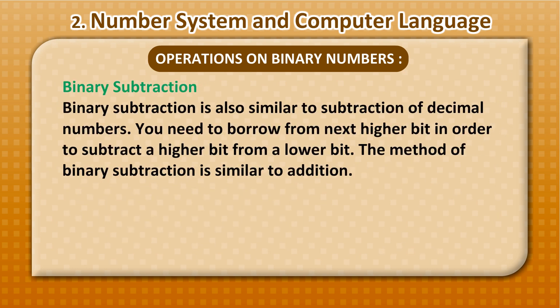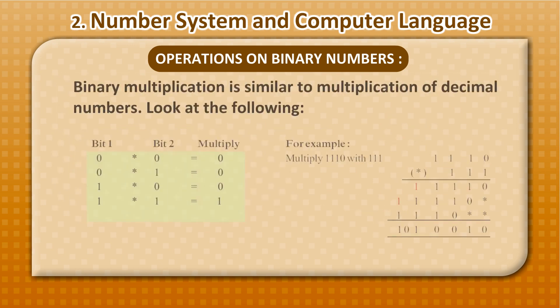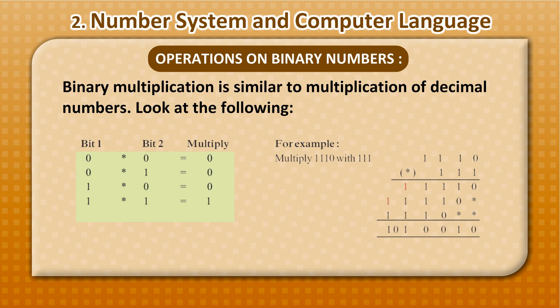Binary subtraction is also similar to subtraction of decimal numbers. You need to borrow from next higher bit in order to subtract a higher bit from a lower bit. The method of binary subtraction is similar to addition. Look at the following rules: 0 minus 0 equals 0, no borrowing. 0 minus 1 equals 1, borrow from left. 1 minus 0 equals 1, no borrowing. 1 minus 1 equals 0, no borrowing.